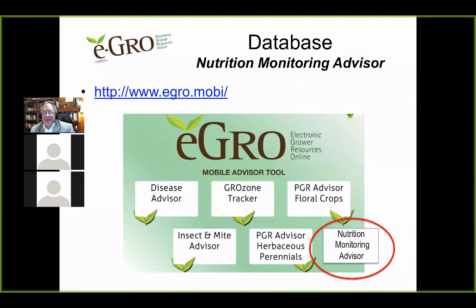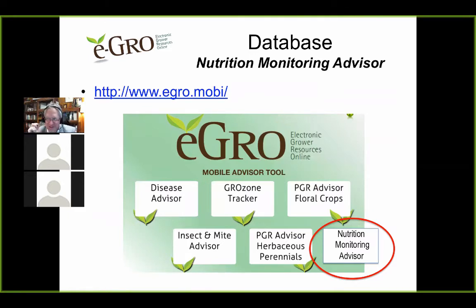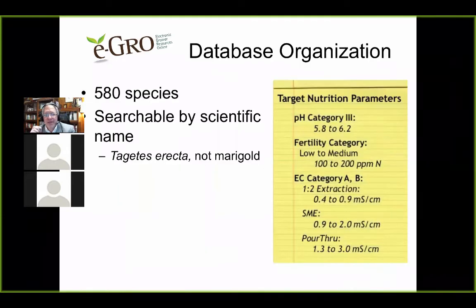The database — I'll show it in a few seconds, it's fresh off the press, the email came at 12:30 with the link and we're still in beta testing. You can access it at the same location as the Grow Zone Tracker. We're calling it the Nutrient Monitoring Advisor. It will have the information from those nutrient fact sheets, and the database has 580 species in it.